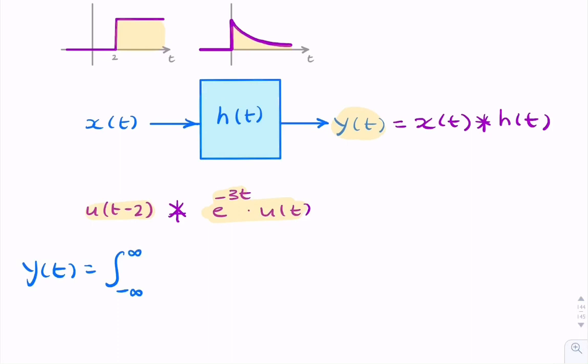Now it's probably easier if I start with this function. So I'll say e to the minus 3α, u(α), and then I'll shift this function. So then I have u(t minus α minus 2) dα.